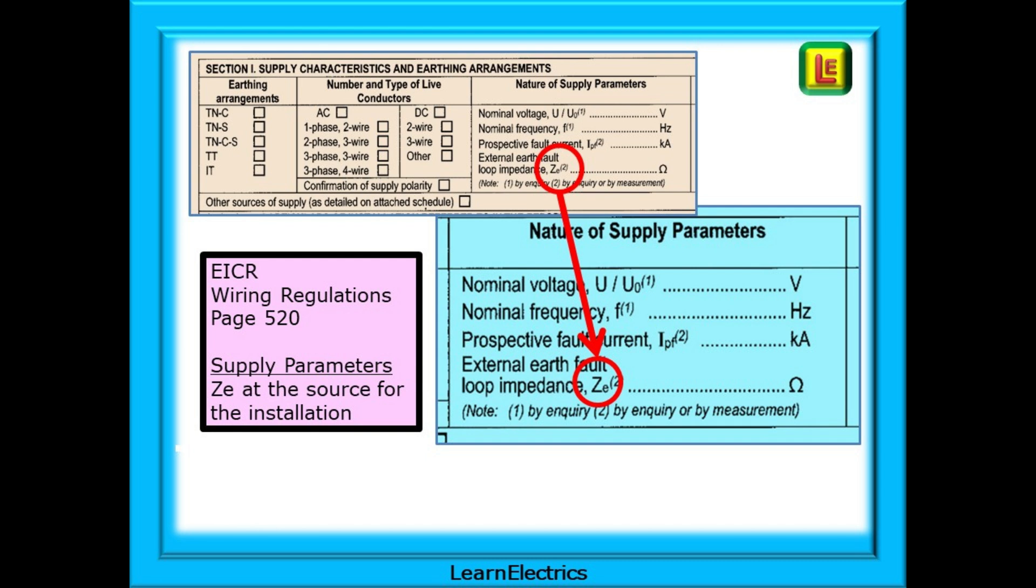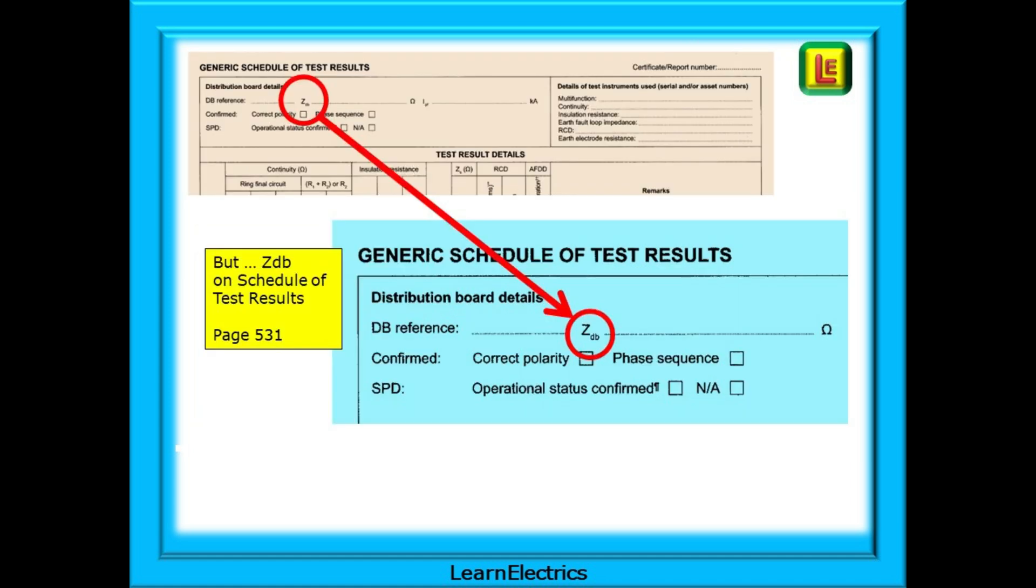Looking at page 2 of an EICR for instance, page 520 in the wiring regs book, we can see that the information requested is for Zdb. But when we fill in the schedule of test results as found on page 531 of the regs, Zdb has suddenly changed to Zdb. Why? What is it? What's happened?